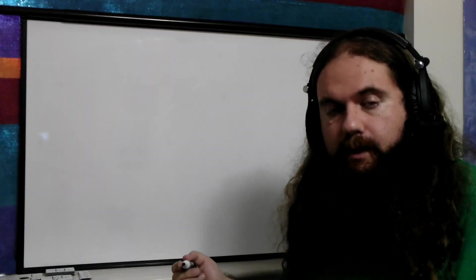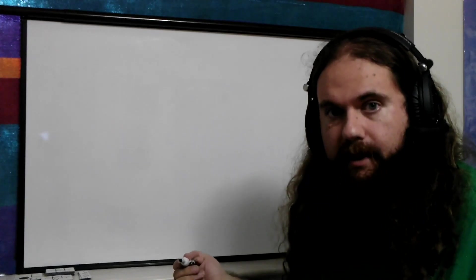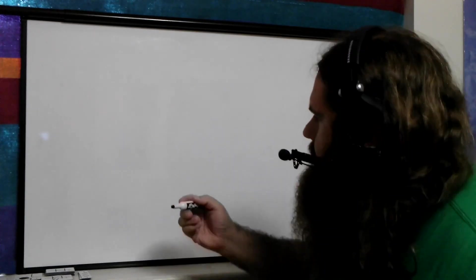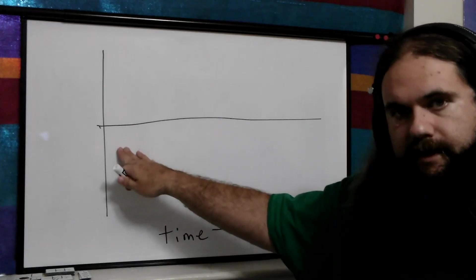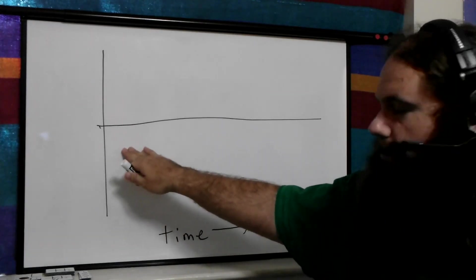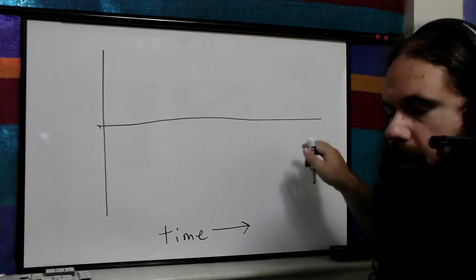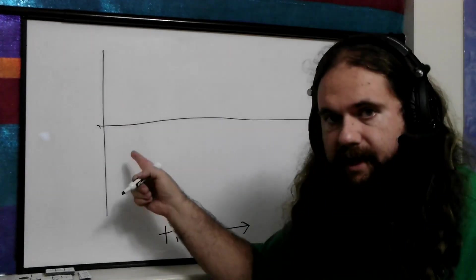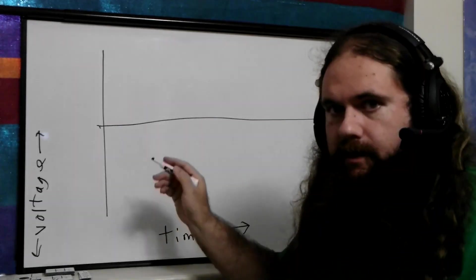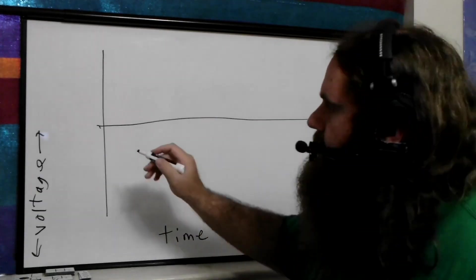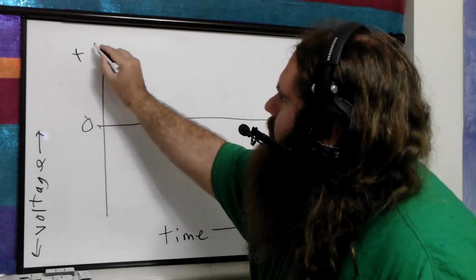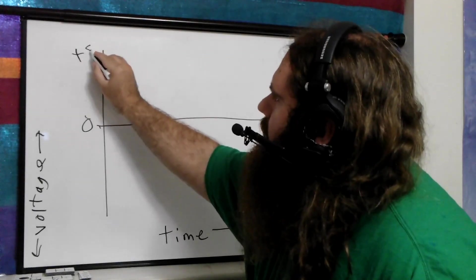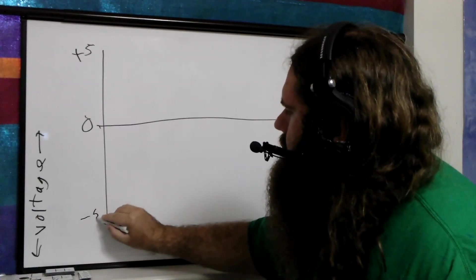Let's have a visual to make this more clear. Let's visualize voltage in AC and DC with a graph. The horizontal axis is time — this is when we start measuring and this is as we continue on. The vertical axis is voltage. We have zero volts here, plus five volts up here, and minus five volts down here.